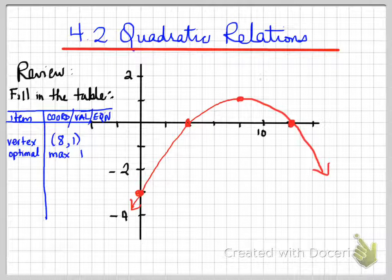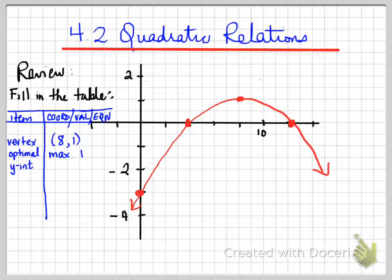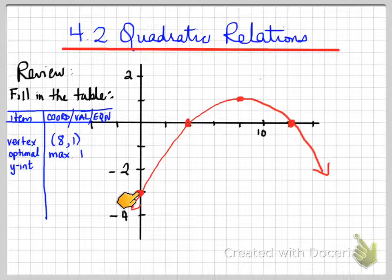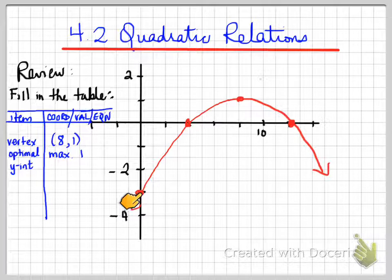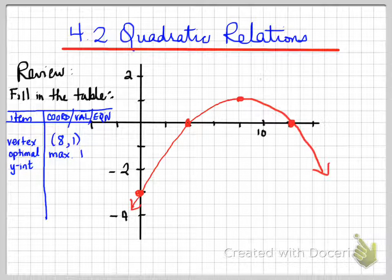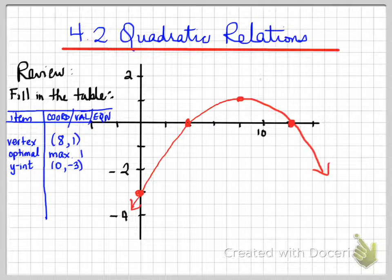The next thing you'll be asked is the y-intercept. Where is the y-intercept? The y-intercept is located right here — this is where the graph crosses the y-axis. It crosses at the value (0, negative 3). We write that as coordinates; it's the best way to give the answer.